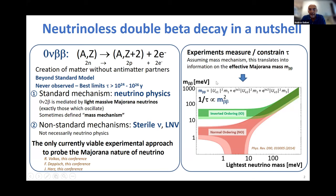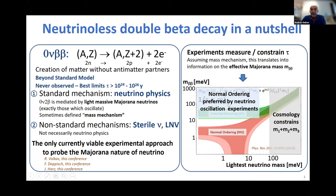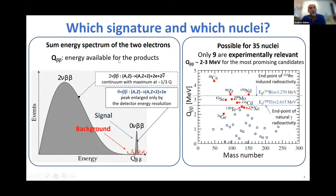Experiments constrain — or in the good case measure — the half-life; assuming the mass mechanism, this gives information on the effective Majorana mass m_ββ. Using the classical plot of m_ββ versus lightest neutrino mass, experiments explore this plot from above. Today, part of this plot is somewhat disfavored: normal ordering is preferred by oscillation experiments, and cosmology constrains the sum of neutrino masses. There is still a window where a rather high m_ββ value around 10–20 meV is possible even with normal ordering.